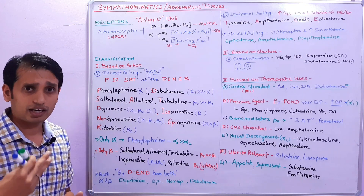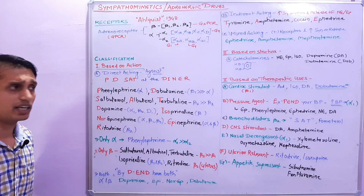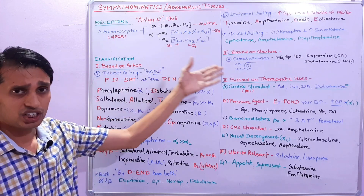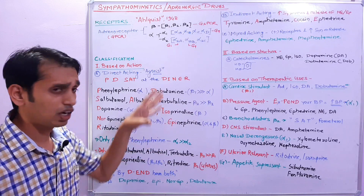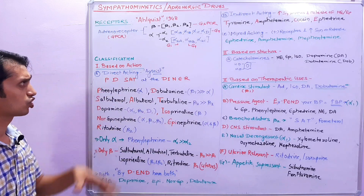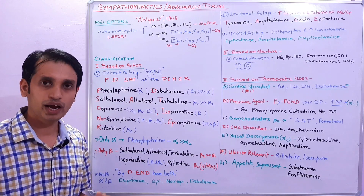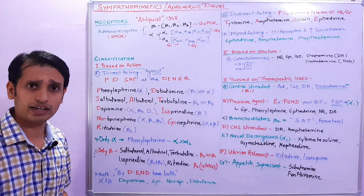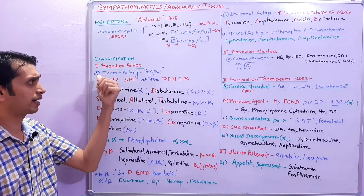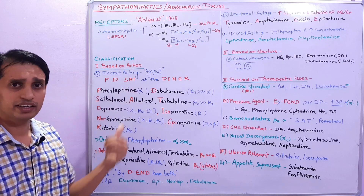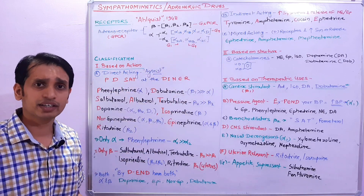Adrenergic drugs are classified in various ways: based on their action, based on their chemical structure, and based on their therapeutic uses. Based on action, adrenergic drugs are classified into three main types: first is direct-acting drugs, second is indirect-acting drugs, and third is mixed-acting drugs.